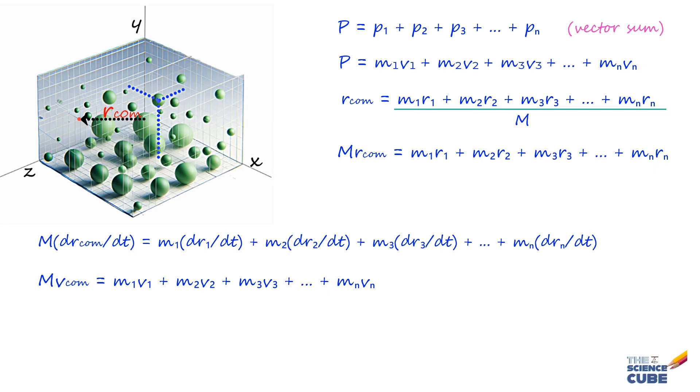Now, we can differentiate this equation with respect to time again to get M·A_com = M₁A₁ + M₂A₂ + M₃A₃ and so on. Finally, from Newton's second law, we can write this equation as M·A_com = F₁ + F₂ + F₃ + F₄ and so on till Fₙ.